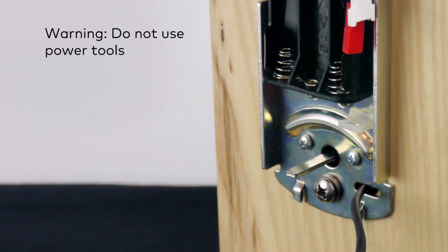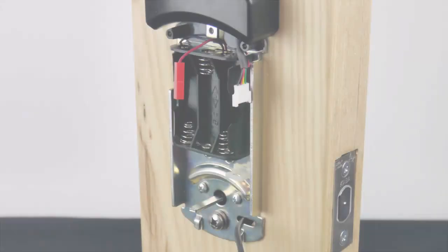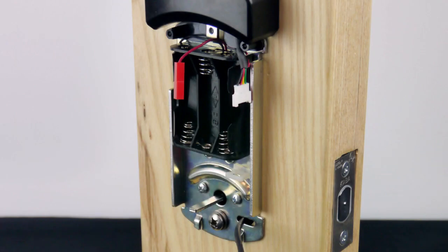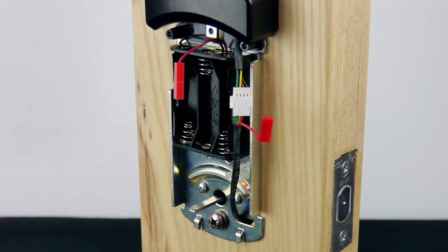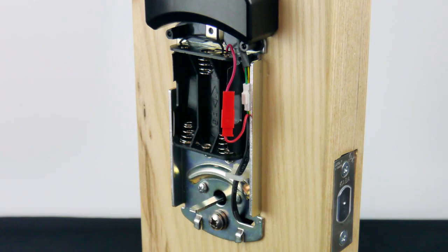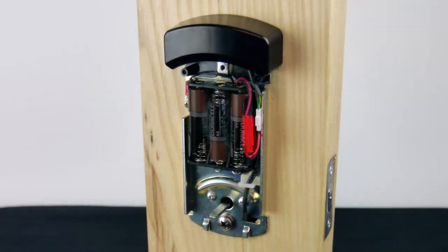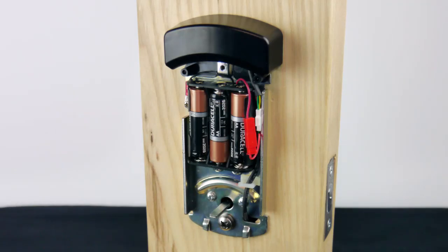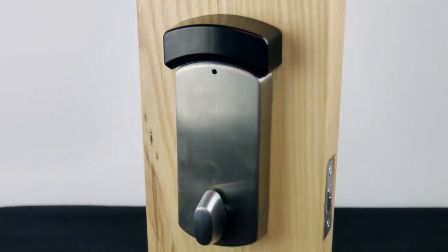Be certain to tighten all these screws very well. Next, connect the wireless antenna cables together. Then connect the power cables. Finally, insert three AA batteries. Install the inside cover and tighten the single screw at the top.